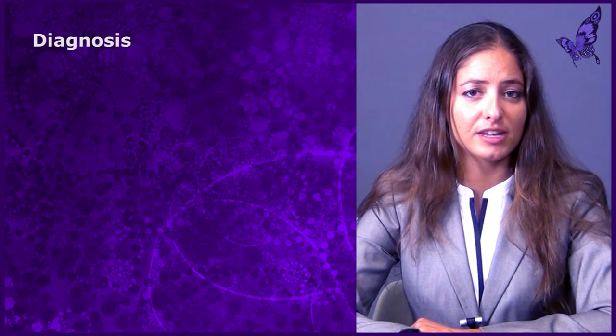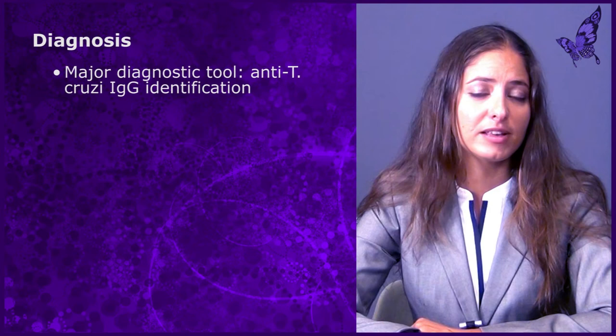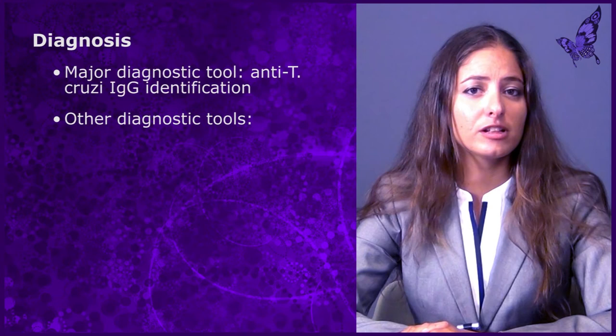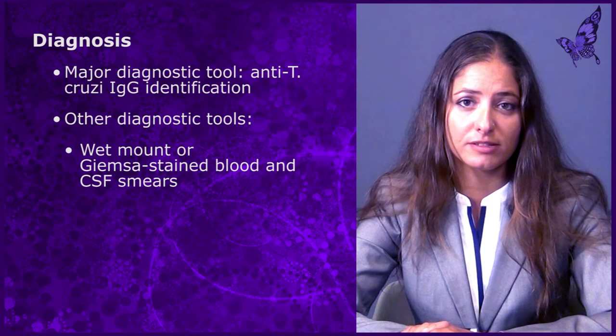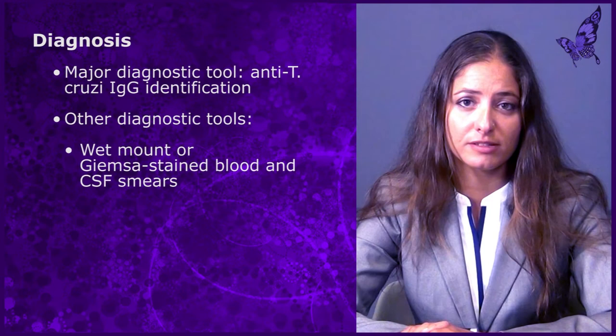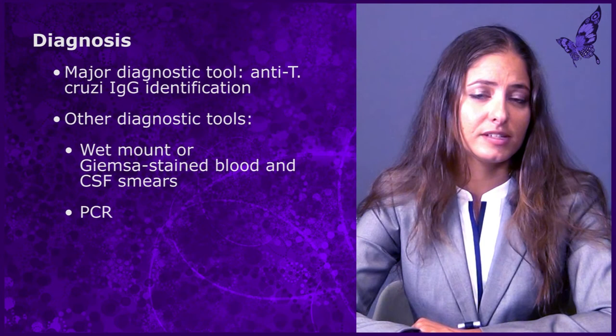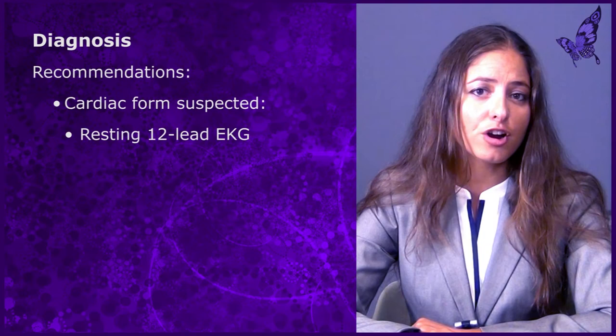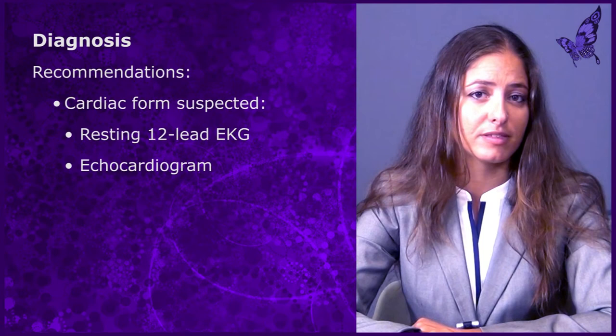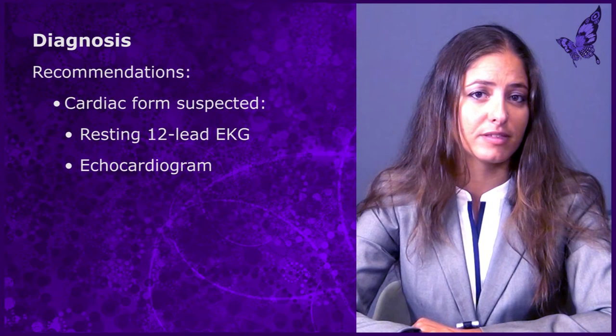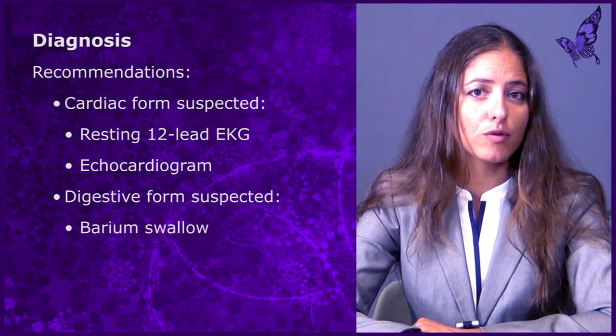Chagas disease is diagnosed mainly via serologic testing with anti-Trypanosoma cruzi IgG. The sensitivity and specificity of serologic testing ranges from 81.7 to 100% and 100% respectively. Other available diagnostic methodologies include wet mount or Giemsa-stained blood smears, CSF smears, and PCR. The sensitivity and specificity of PCR ranges from 33.3% to 96.5% and 100% respectively. If cardiac involvement is suspected, an EKG and echocardiogram should be performed to evaluate for arrhythmias and dilated cardiomyopathy. In the event that GI involvement is suspected, a barium swallow and enema can identify the presence of megaesophagus and megacolon respectively.